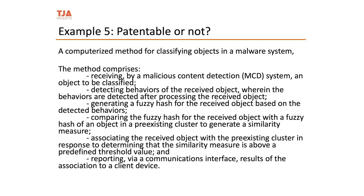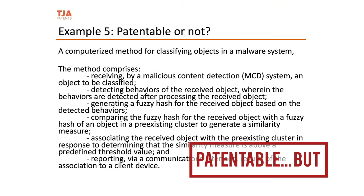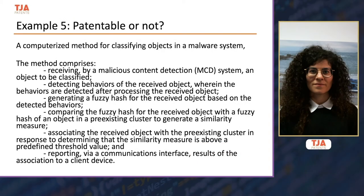For classifying malware systems, this is also a computer-implemented method that lists a set of steps. In this particular case, the main technical feature was the use of fuzzy structures, making the method patentable. However, because certain features were considered as not involving an inventive step over the prior art, some features had to be incorporated into the claim. The underlying features were ultimately what gave the claim its non-obviousness requirement.